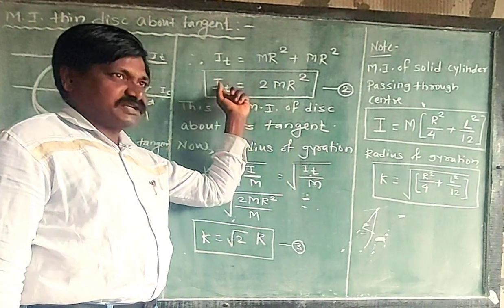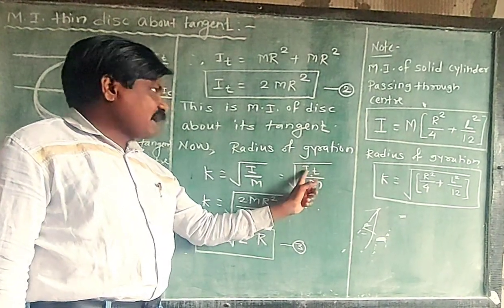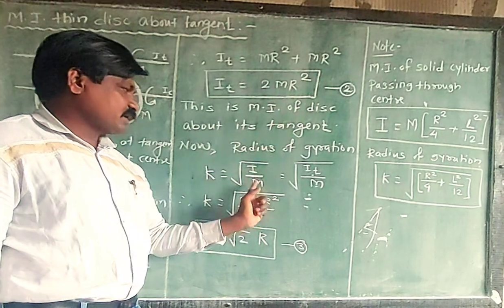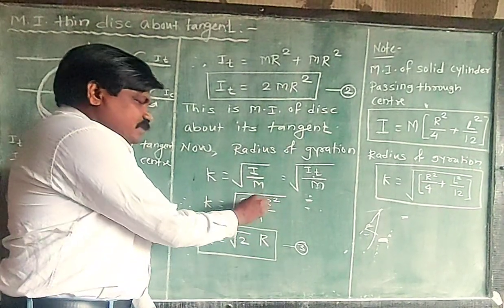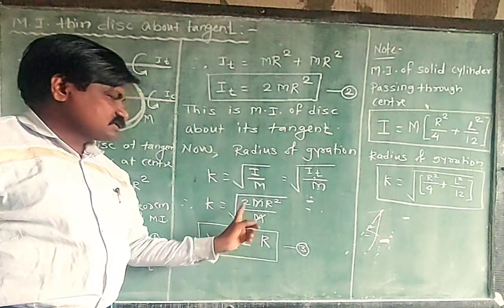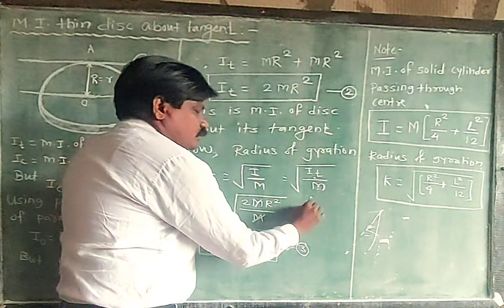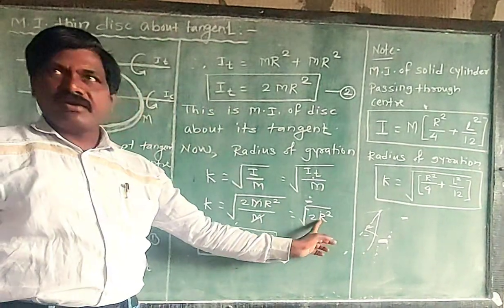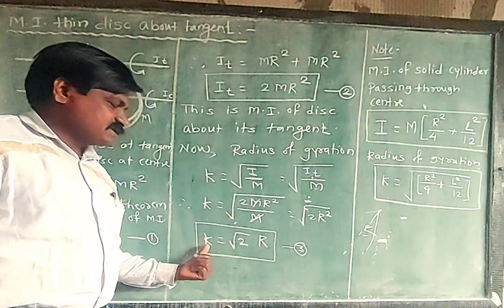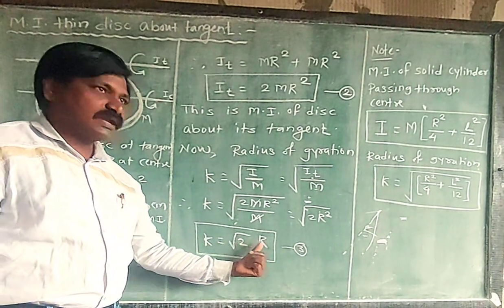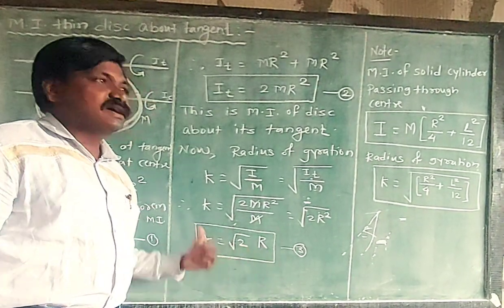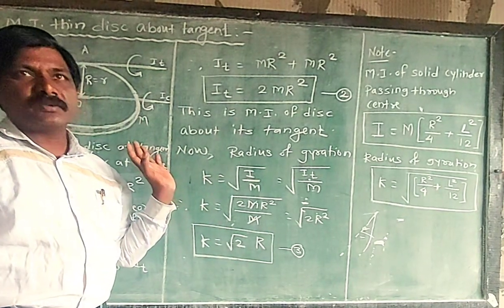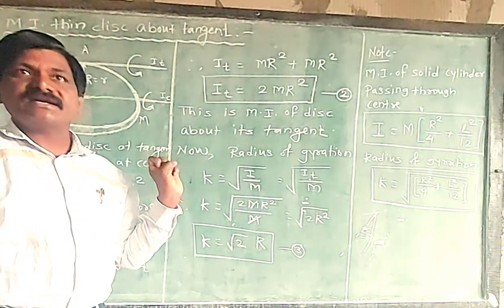Radius of gyration K is equal to under root of I upon M. Here I's value is I_K tangent upon M. Here I_T's value is 3/2 MR square. So 3/2 MR square. M gets cancelled. So what remains? Under root of 3/2 R square, right? Here R square comes out of the square root as R. So K is equal to the formula under root of 3/2 times R. And this is the radius of gyration of a disc passing through its tangent.